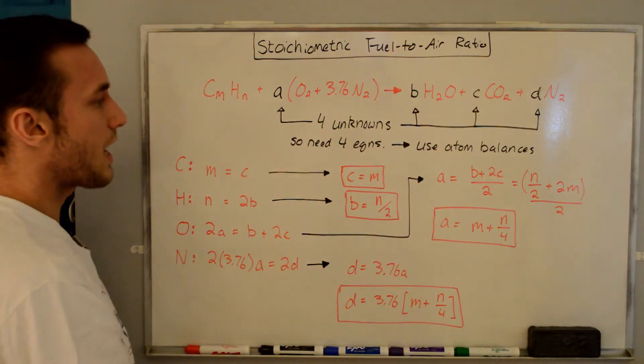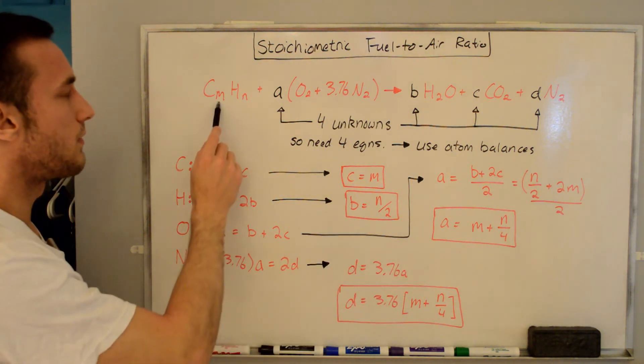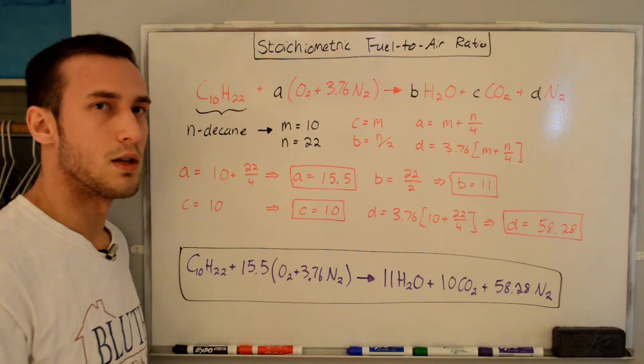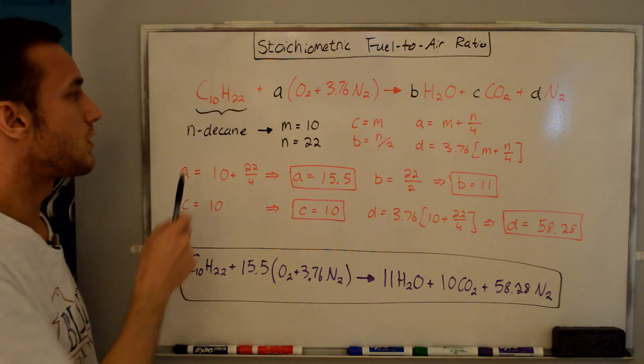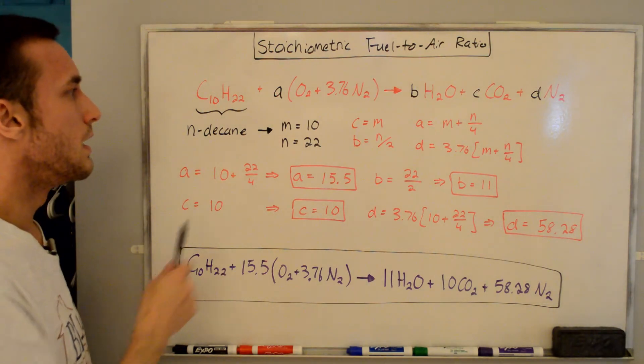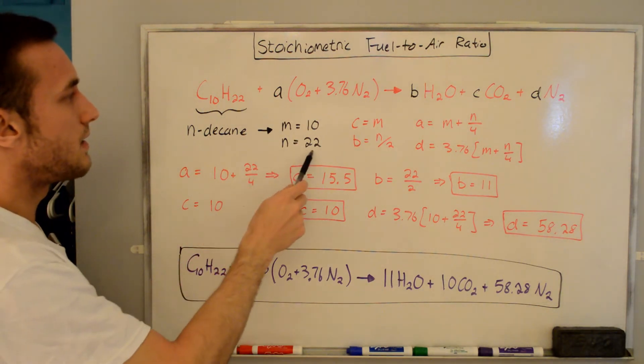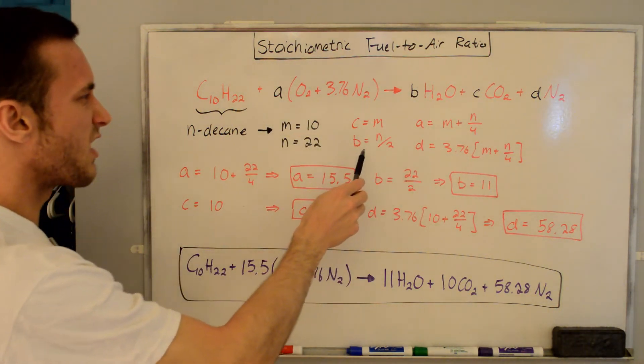So now for this global reaction here, we know everything A, B, C, and D in terms of the values of M and N that define our fuel. So now to continue, let's use some real numbers. We're going to be going through the example with C10H22, which is also called N-decane. And this is just typical of an aviation fuel. And so M is equal to 10, N is equal to 22. And now we need to solve for A, B, C, and D where the equations are rewritten here again.